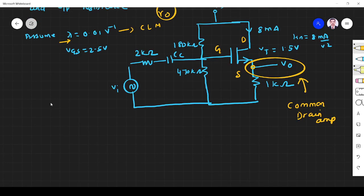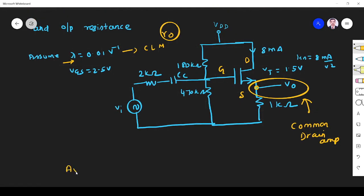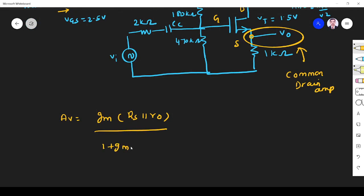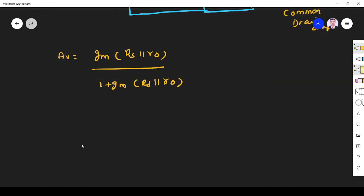What is the voltage gain equation for a common drain amplifier? It is gm times Rs parallel ro divided by 1 plus gm times Rs parallel ro. So we have to find all the parameters. What is gm? We know for gm the formula is 2k times VGS minus VT. So 2 into k, they are given it is 8 milliampere per volt square. VGS is 2.5, VT is 1.5, so gm is equal to 16 milliampere per volt.